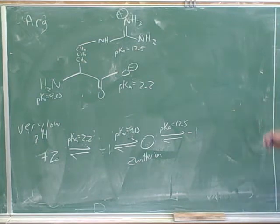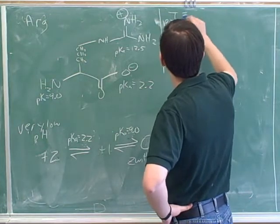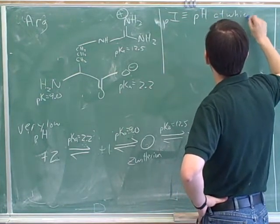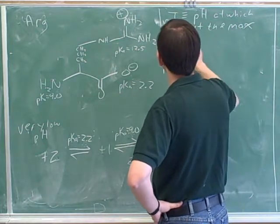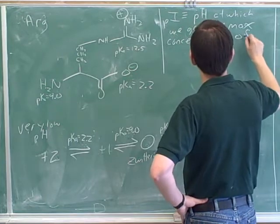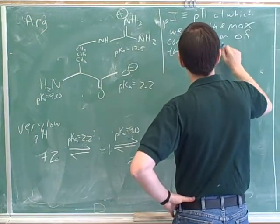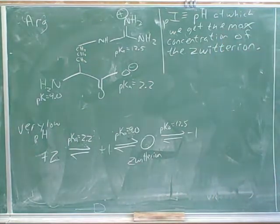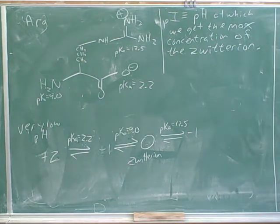Now we have to figure out how to find the pI. The pI by definition is the pH at which we get the maximum concentration of the Zwitterion. We already have the skills to calculate the pI. How would we calculate the pI for arginine? We do the average of 9 and 12.5.